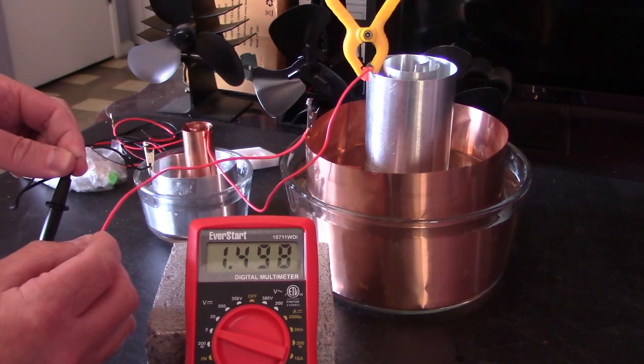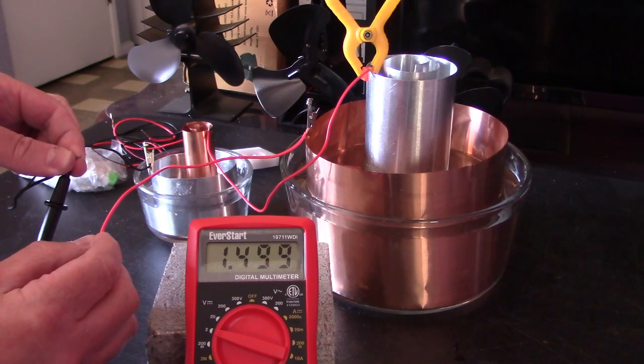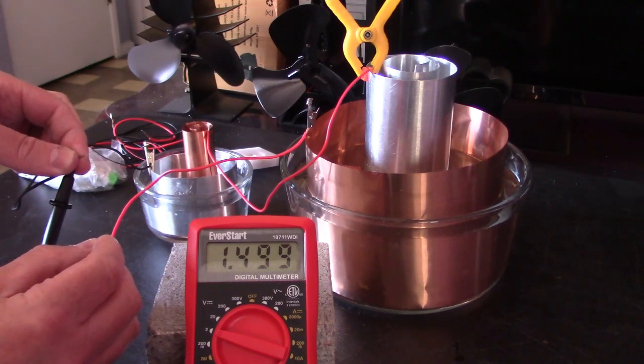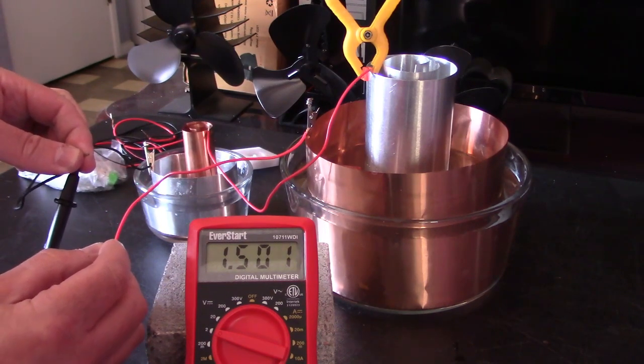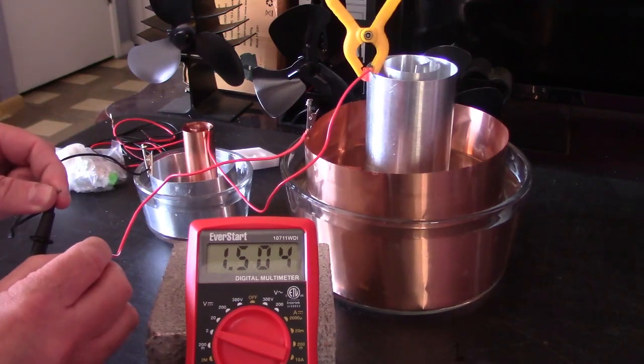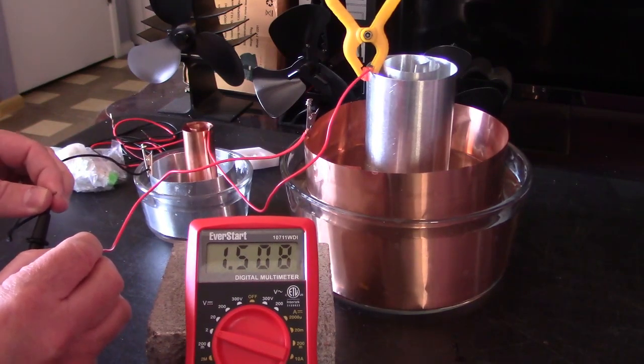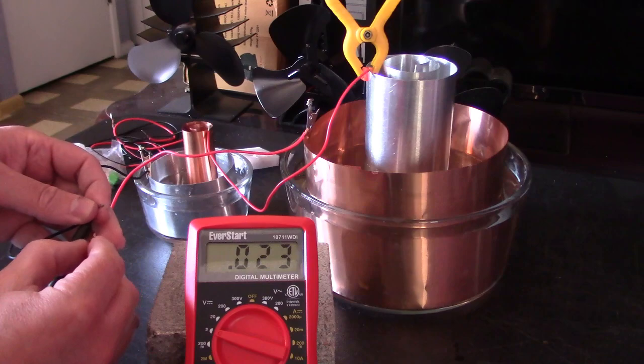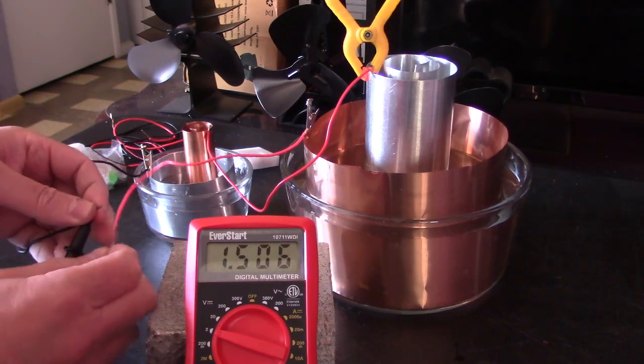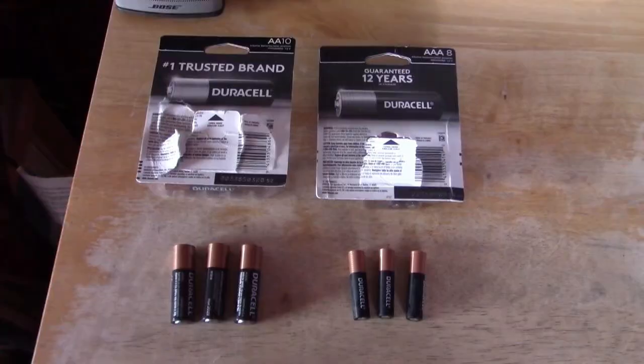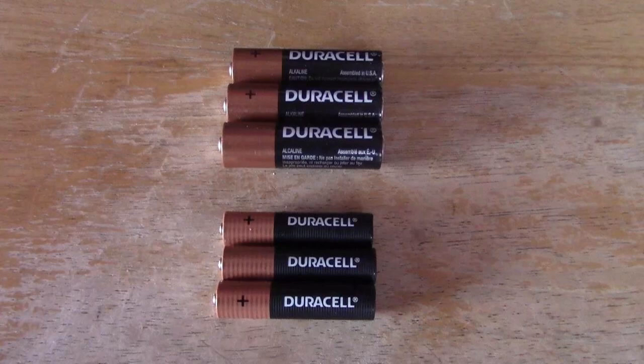Okay, there you go. Hope you can see this okay. Wow, that's exactly 1.5, 1.499. It puts out the same voltage as these, just any standard AA, AAA, C or D dry cell battery.